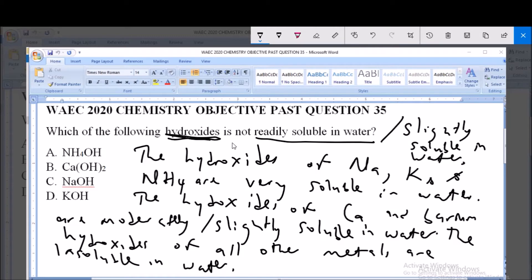So this is the rule to remember that guides solubility of hydroxides. Now looking at the options, we have ammonium hydroxide here and we said the hydroxides of ammonium is one of those that is very soluble. So this is not the answer.